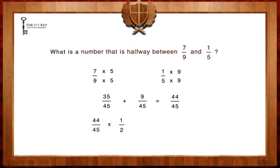When we multiply 44 over 45 by a half, we can divide 44 by 2. We are left with 22 over 45. Therefore, our answer is D.